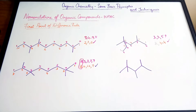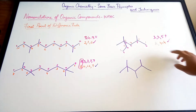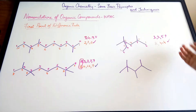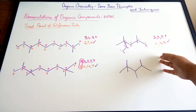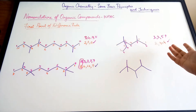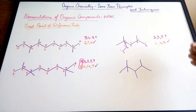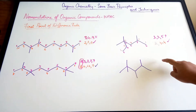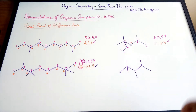The numbers we assign are called locants. Locants give us information about the position of a particular substituent or principal functional group in the carbon chain. We want the first point of difference of the locants to be considered, and the one which is lower gives the correct numbering.